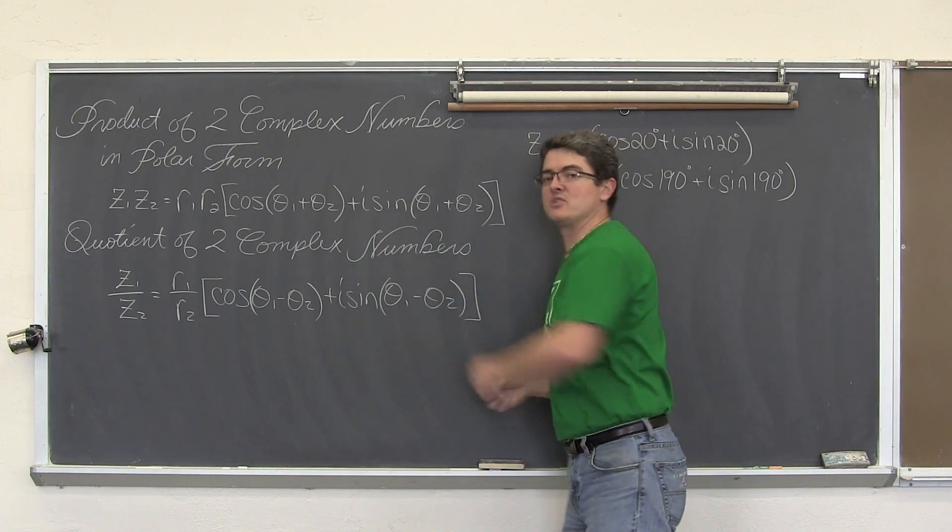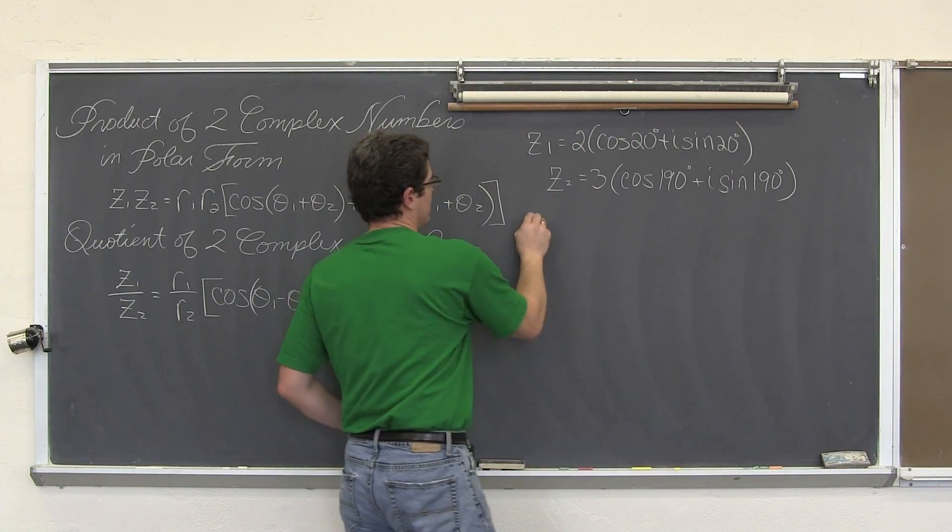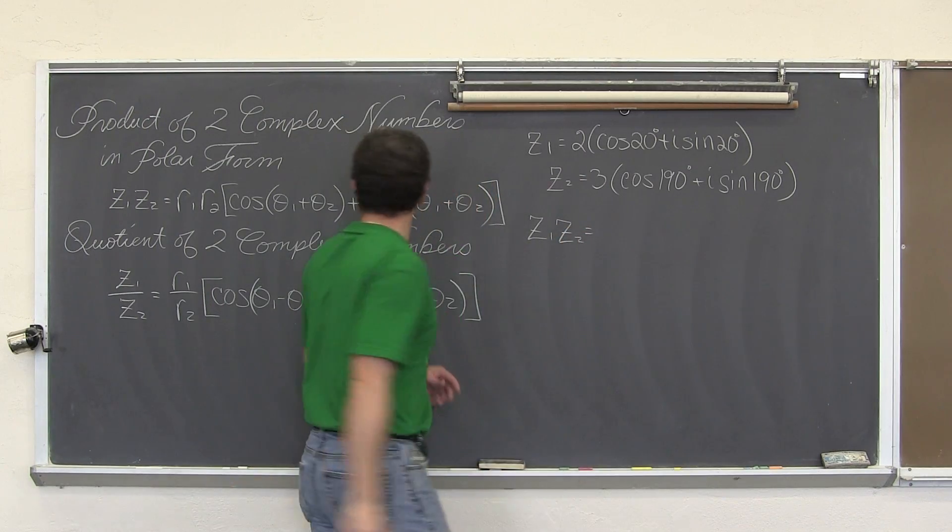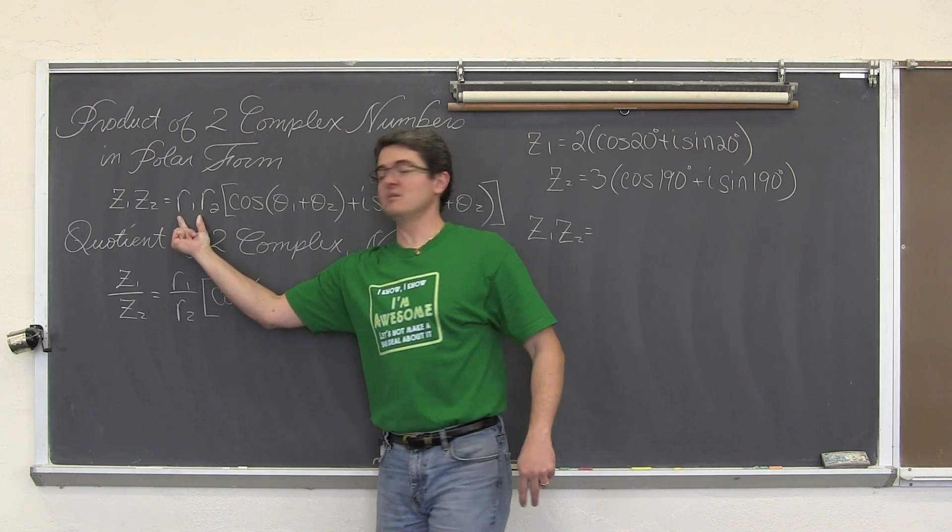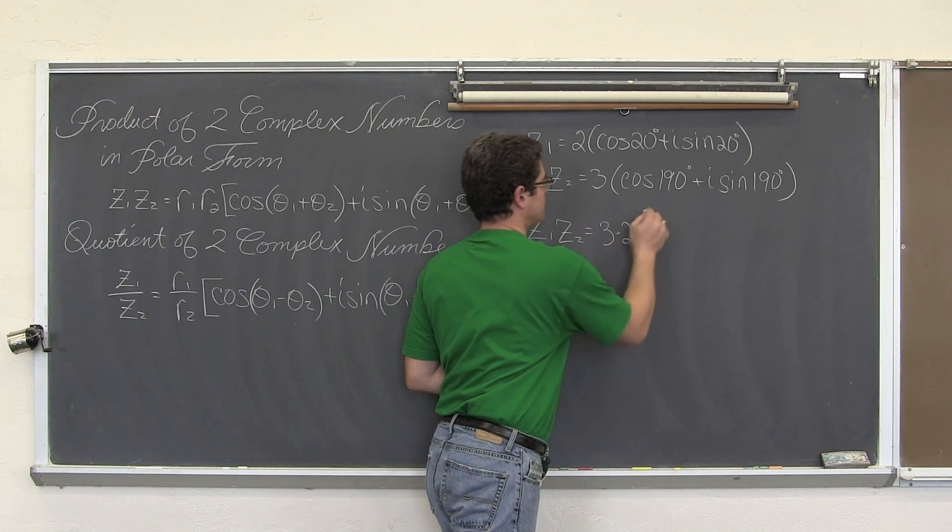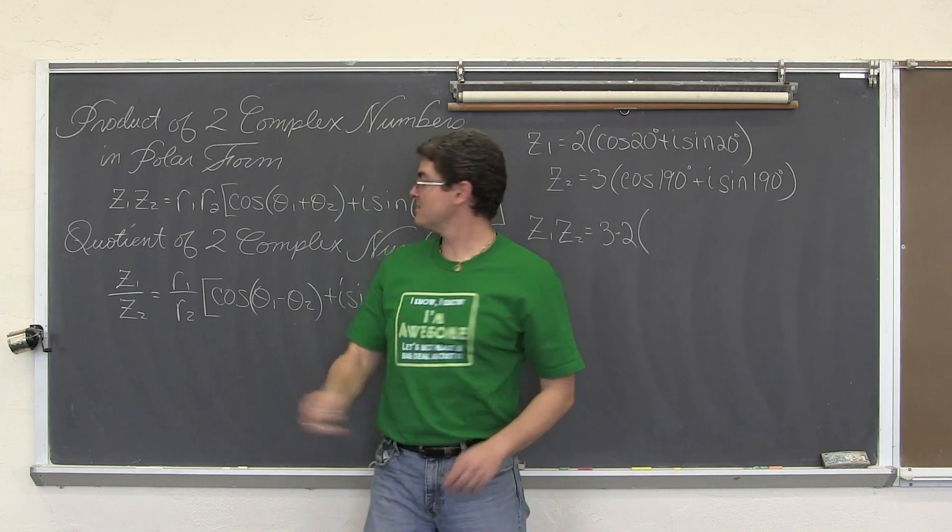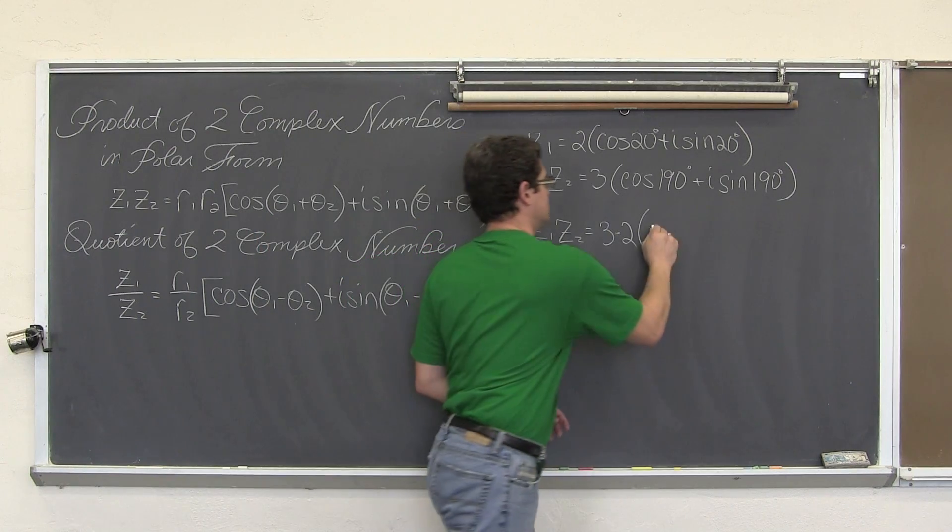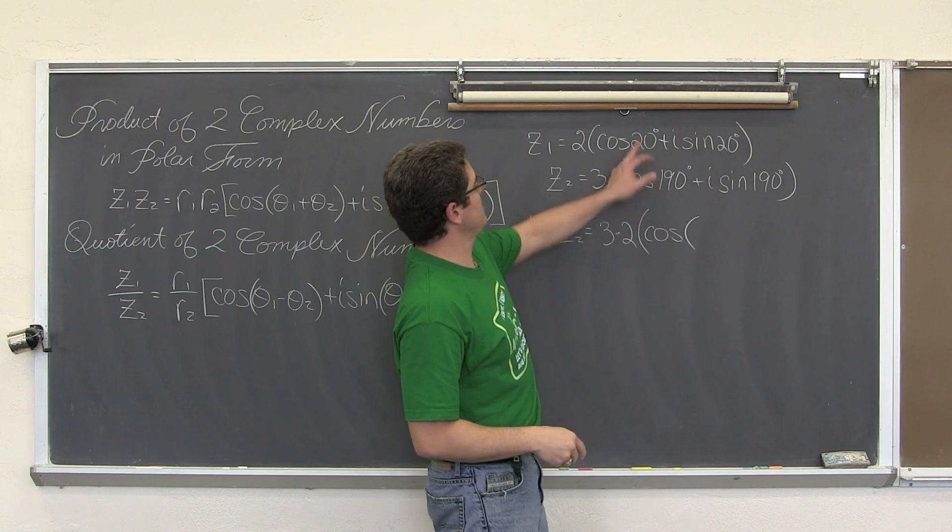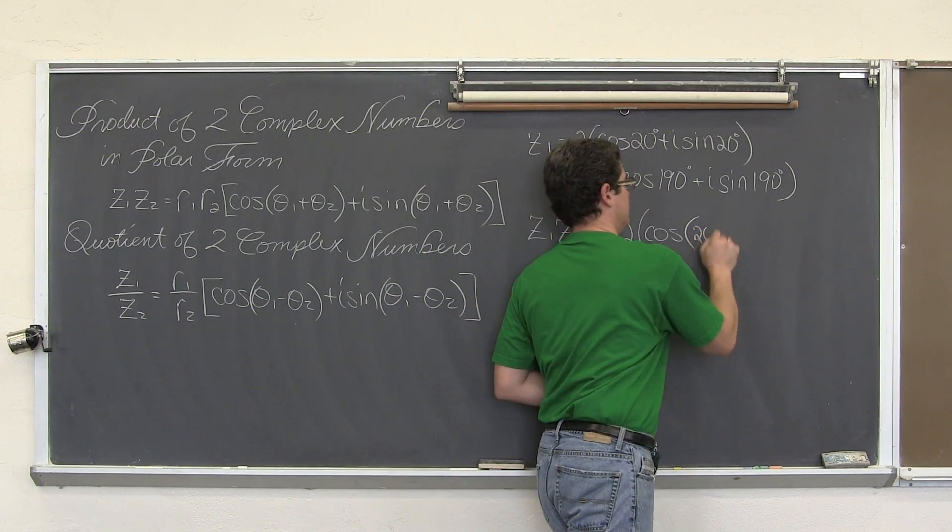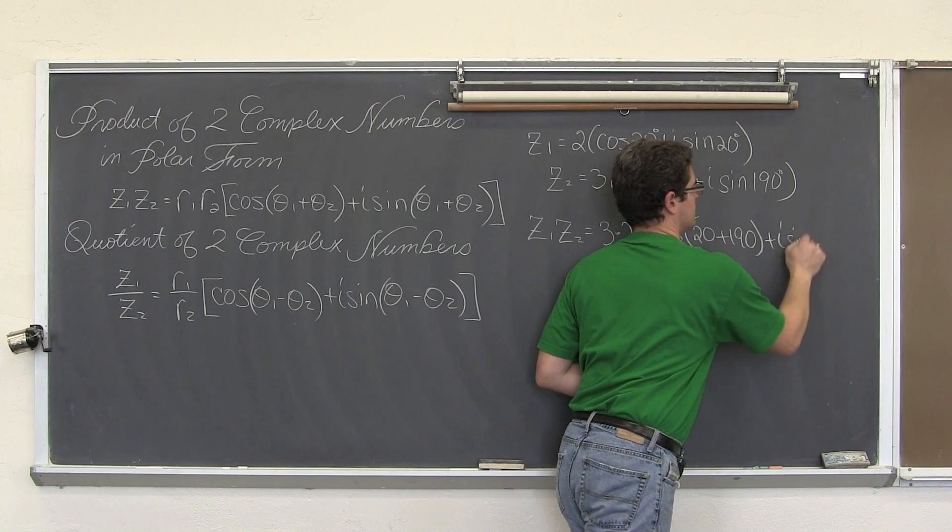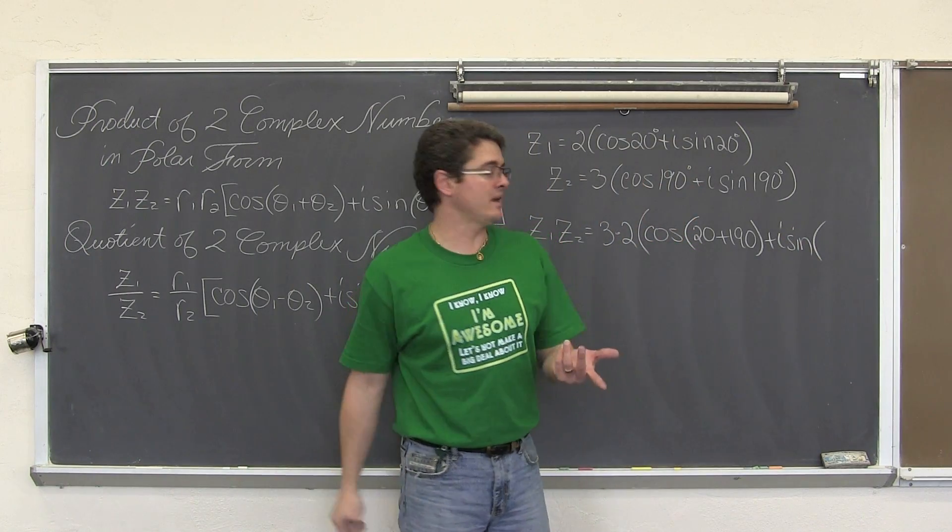Like this formula shows, if you want to find z₁ times z₂, just take the two radiuses and multiply them together. So 3 times 2 is 6, times cosine of the two angles being added. That's going to be 20 plus 190, plus i sine of those same two angles being added again.